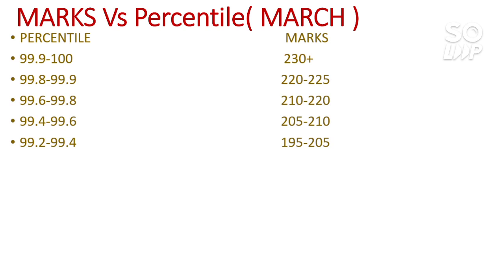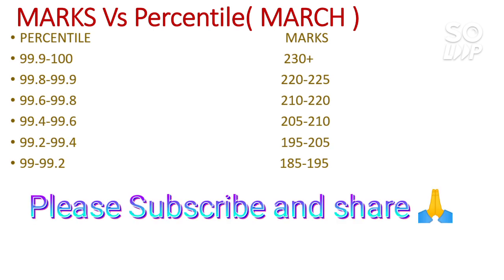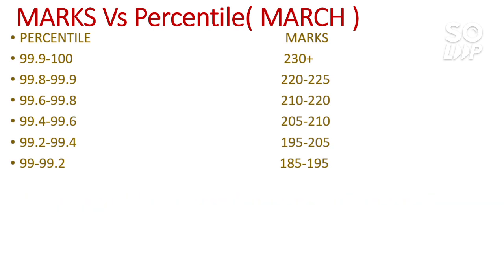For 99.2 to 99.4 percentile, you need 195 to 205 marks. For 99 to 99.2, you need 185 to 195. If you are from EWS or OBC and targeting CS in the top 5 NITs, scoring in the 99 to 99.2 percentile range will be your safer target. For 98.5 to 99, you need 170 to 185 marks.